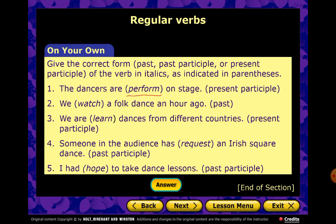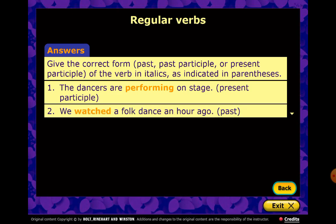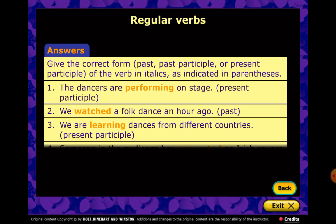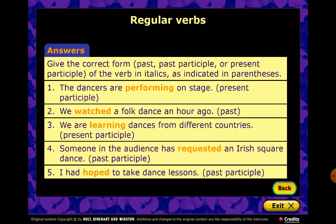Now answer these in your mind: make 'perform' into present participle, 'watch' into past, 'learn' into present participle, 'request' into past participle, and 'hope' into past participle. The answers: 'the dancers are performing' — present participle; 'we watched' — past; 'we are learning' — present participle; 'someone has requested' — past participle; 'I had hoped to take dance lessons' — past participle. Check your answers.